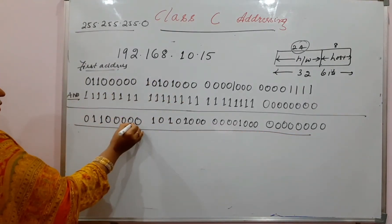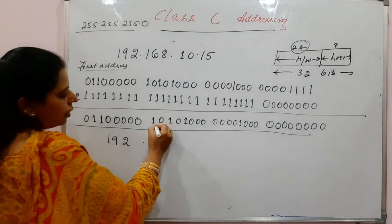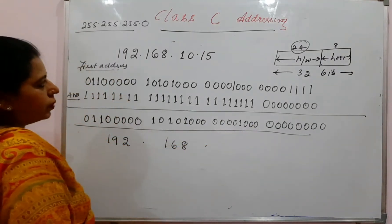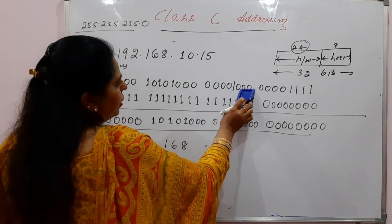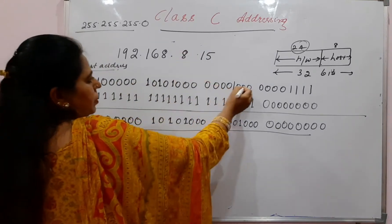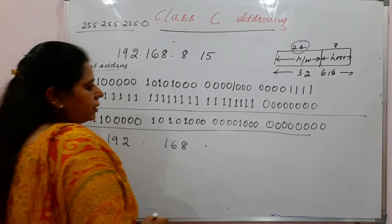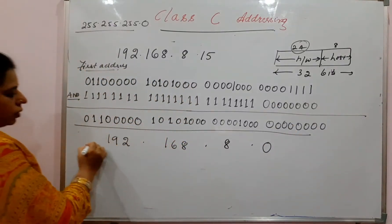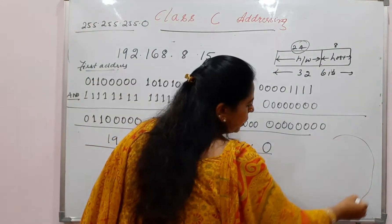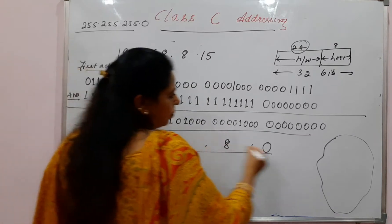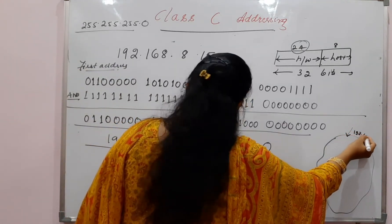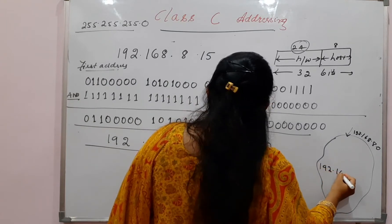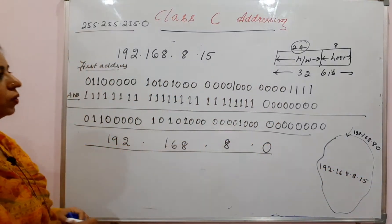Convert the AND result back to decimal. The first octet gives 192, the second gives 168. Note: the third octet was actually 10 in the IP address, but when written in binary and ANDed, the result for the third octet is 8. So the network address (first address) is 192.168.8.0.